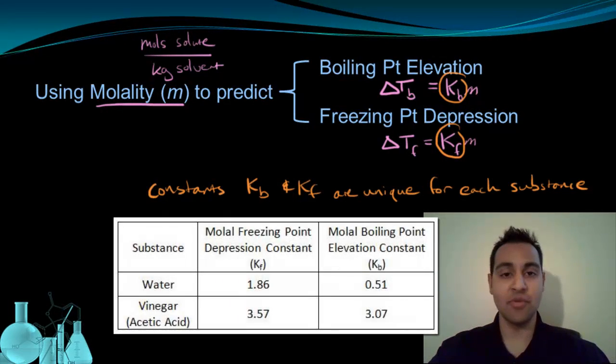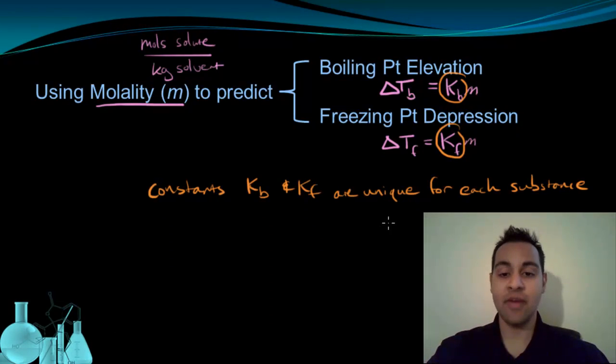Here's a table that shows the molal constants Kb and Kf for water and vinegar. As you can see, the values are different for Kb and Kf for both boiling point elevation and freezing point depression for each substance. The last thing we're going to point out is that the units for these constants are always degrees Celsius per molal, lowercase m.